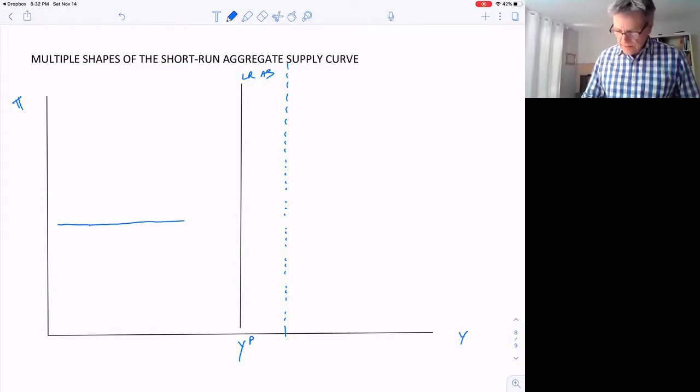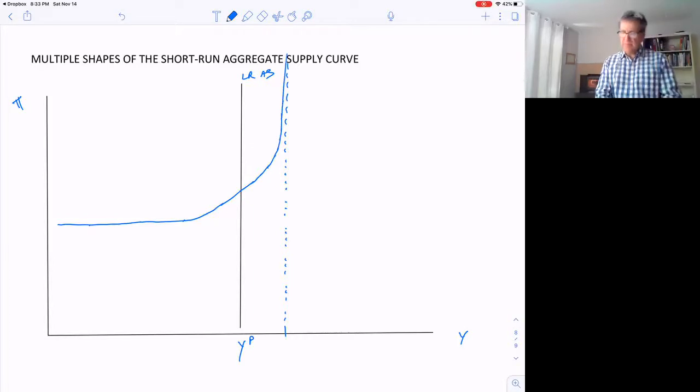And then it will start to increase as we get closer to potential. And then as we go past potential, it might be running up against some sort of wall that we really can't get past. So the short run aggregate supply curve could look something like this, where flat down in the low ranges of GDP and vertical up at the higher ranges.